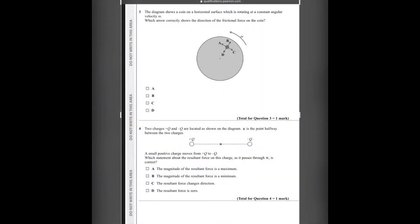Number 4. Two charges plus Q and minus Q are located as shown on the diagram. X is the point halfway between the two charges. A small positive charge moves from plus Q to minus Q. Which statement about the resultant force on this charge as it passes through X is correct? We have a plus charge and a minus charge. The electric fields will look like this. When we are halfway between the plus and minus, the electric field here will be zero. The force acting should have been zero. The answer should have been D, but it is not the answer since it is talking about a positive charge. Even if it is between the two charges, the electric field at point X is zero as it is equidistant. But force on the particle is not zero since the particle itself is charged. Some force is acting on it due to it being charged. The answer is B.